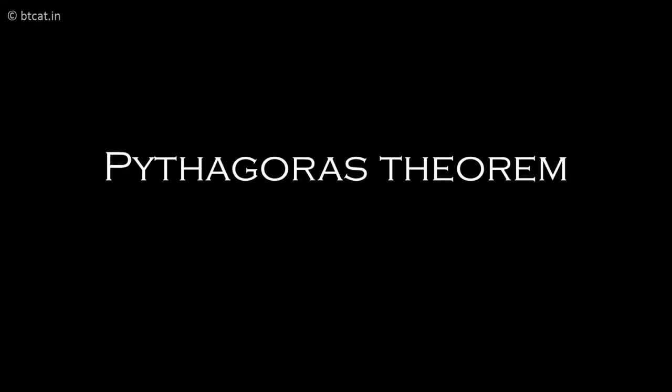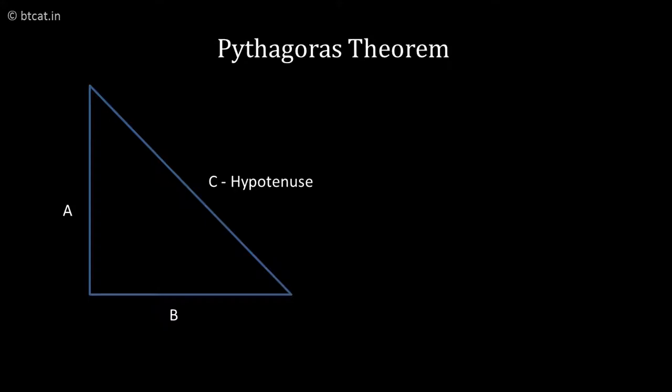In triangles, let us spend more time on a very major property which is Pythagoras theorem. Pythagoras theorem says that in a right angle triangle, if the sides are denoted by a, b and c, where c is the largest side called the hypotenuse, the property says that c² = a² + b². The square of the hypotenuse is equal to the sum of the squares of the other two sides, and this is called Pythagoras theorem.